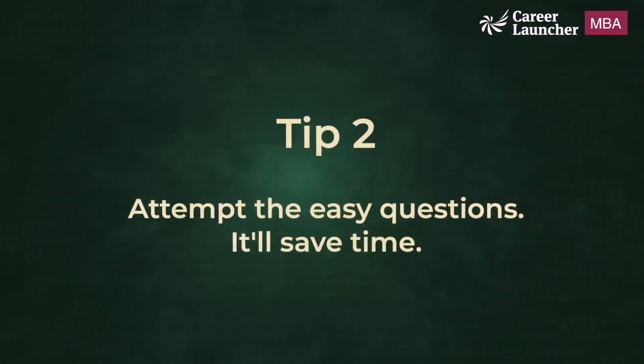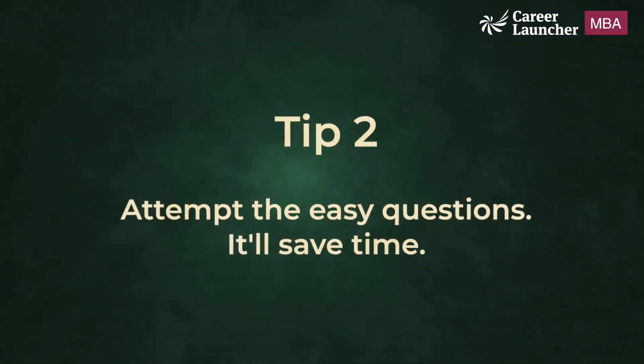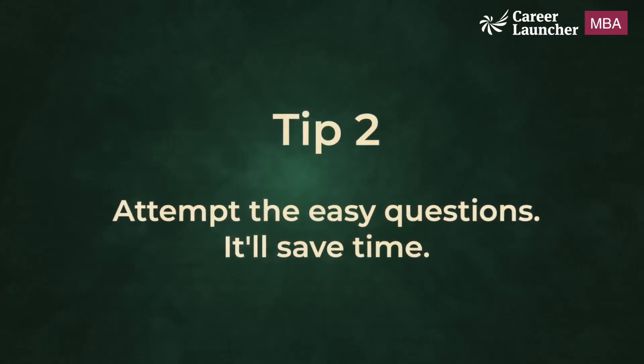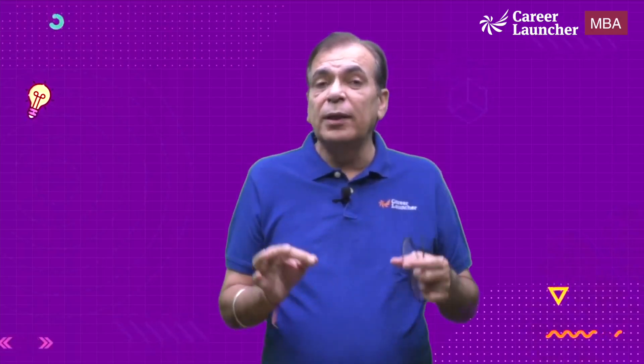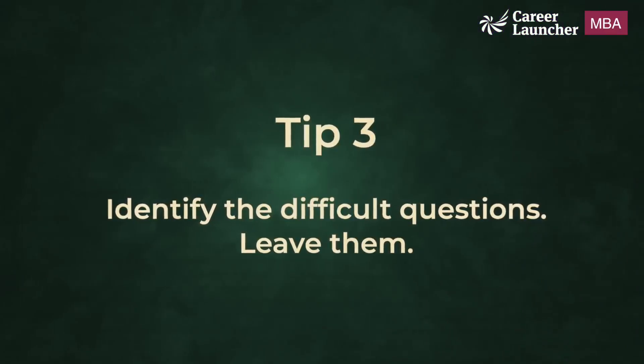The second step: given that you need to attempt fewer questions, make sure you keep attempting only the easy questions. Your job is not to attempt difficult questions. A difficult question will take more time and you are liable to make a mistake. You get the same marks whether you do the question in 2 minutes or 20 minutes, so your job is to attempt only the easy questions — questions that you know.